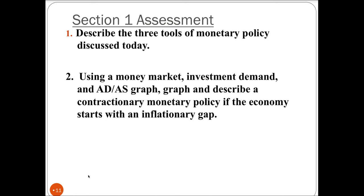Describe the three tools that would be used in a contractionary monetary policy to fight inflation, then graph those effects on a money market, investment demand, and AD-AS graph. With the money market graph, since this is contractionary monetary policy, you're going to decrease the money supply, show what effect that has on investment demand, and then show the effect on aggregate demand and aggregate supply. It's very similar to the last slide but the opposite, because we're starting with an inflationary gap.